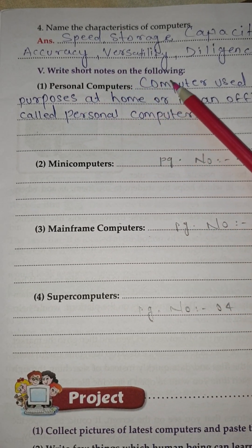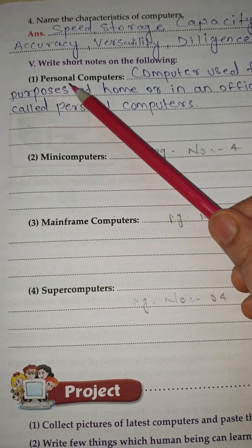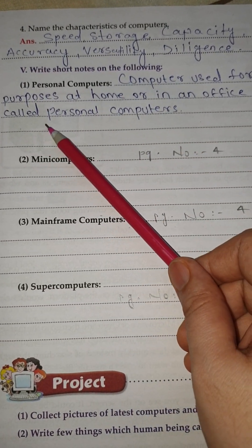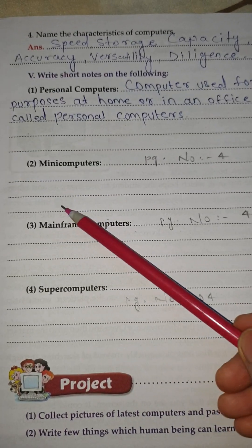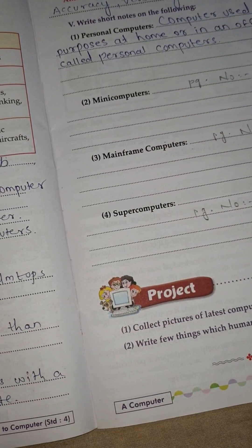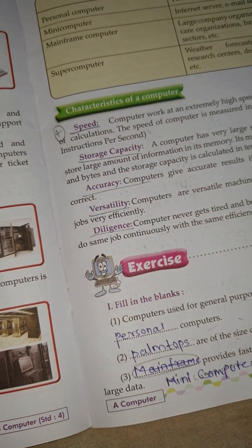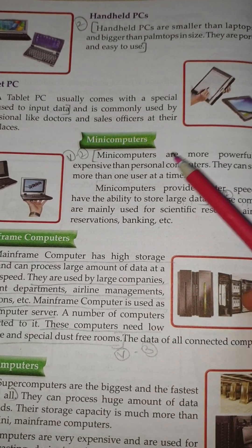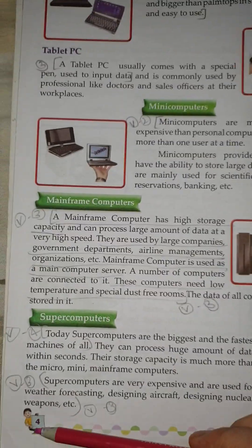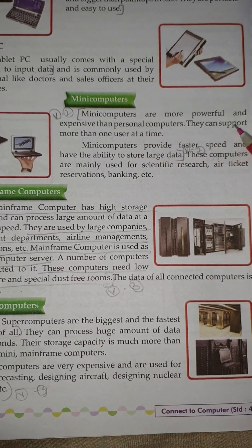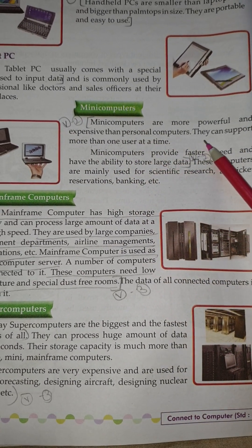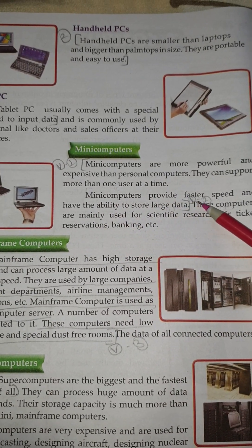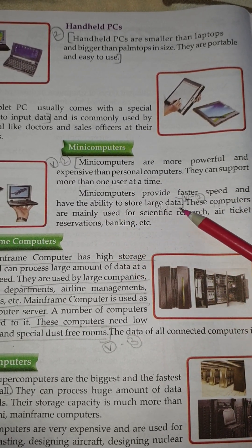Question number 5: Write short notes on the following. Question 1 — Personal Computer: Computers used for general purpose at home or in an office are called Personal Computers. Question 2 — Mini Computer: Mini Computers are more powerful and expensive than personal computers. They can support more than one user at a time and provide faster speeds with the ability to store large data.